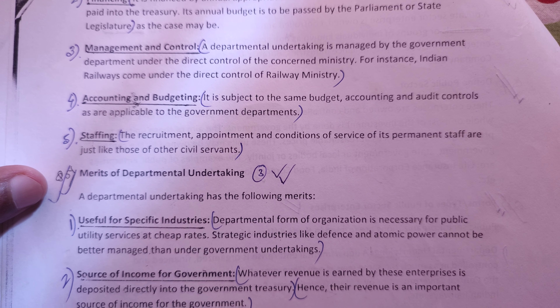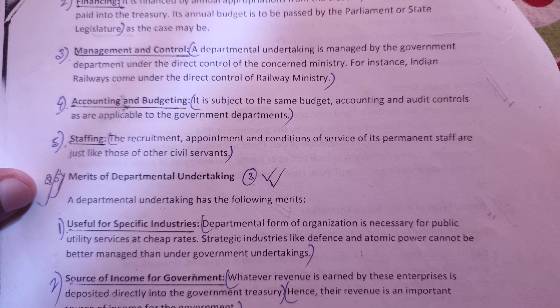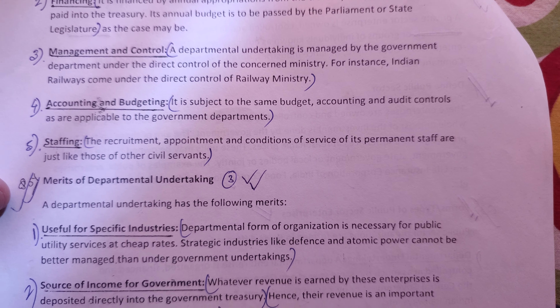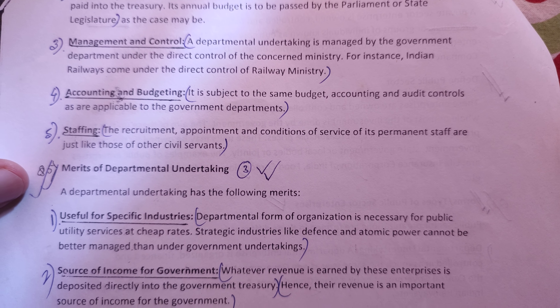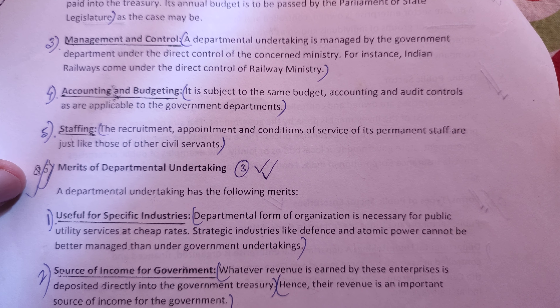Number four is accounting and budgeting. It is subject to the same budget, accounting, and audit controls as are applicable to the government departments.